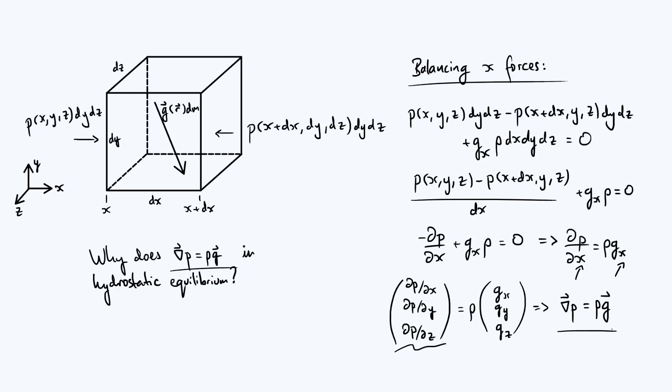I'd like to stress that this grad p equals rho g result is quite a powerful result, and writing it in that way is not just a notational convenience to save you from having to write out three separate components. That final step that we did was making the leap from a coordinate-based form of the equations to a coordinate-independent form of the equations, which goes back to what I was saying at the beginning. We can apply that gradient equation in any coordinate system we like.